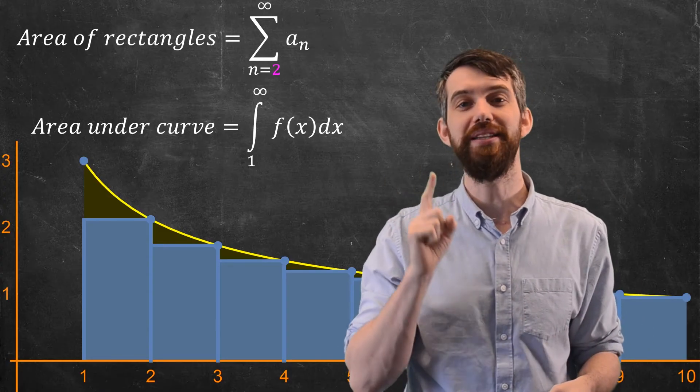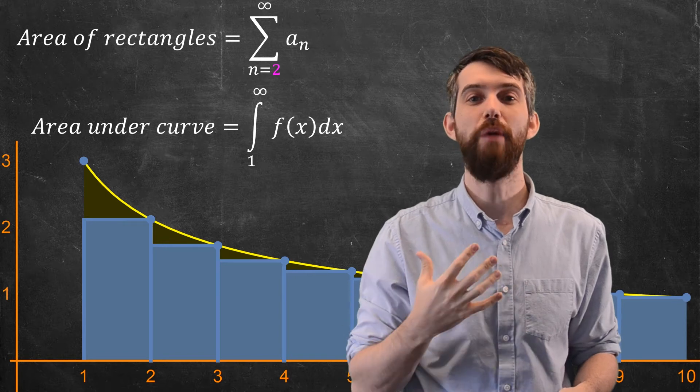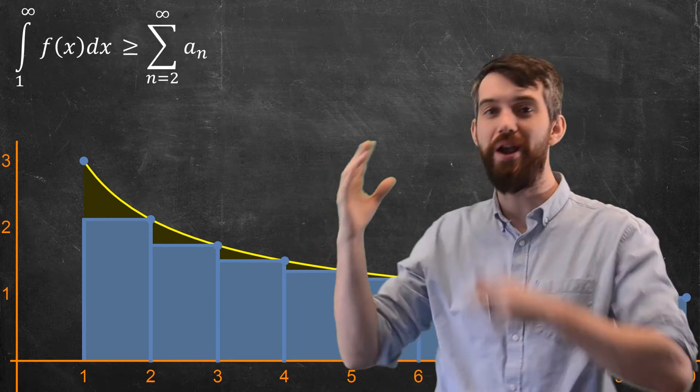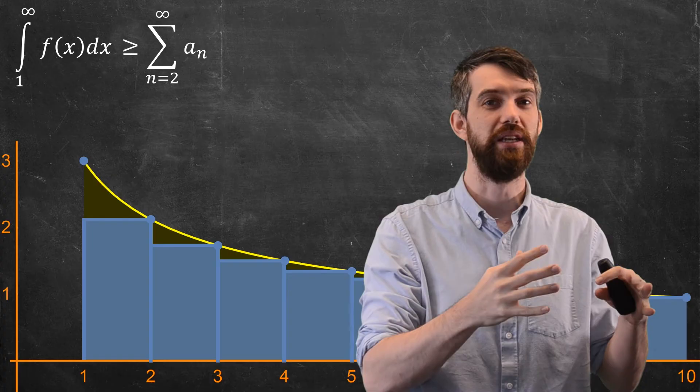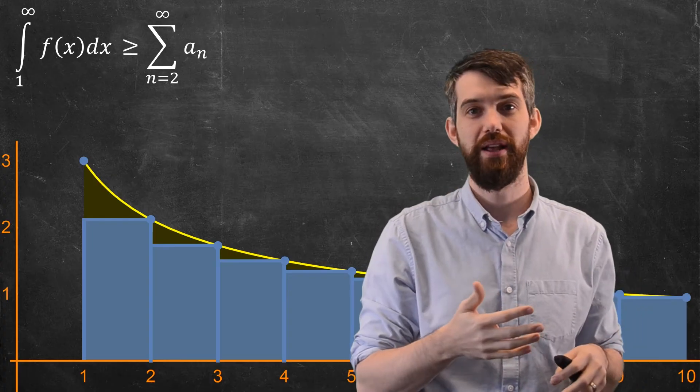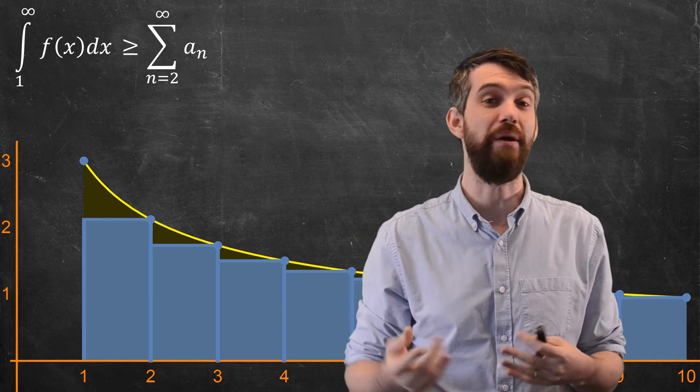Now my inequality is the other way around, which is to say that the improper integral is going to be the bigger one. It is bigger than this series from 2 all the way up to infinity. And so now when I do my analysis, it goes the other way around.